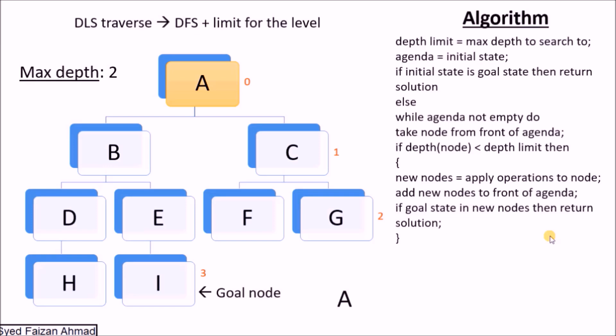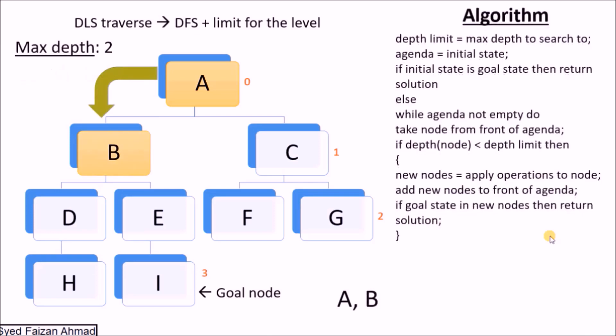A must be the root node. If you move on to the goal state here, then we will move on to the root node.